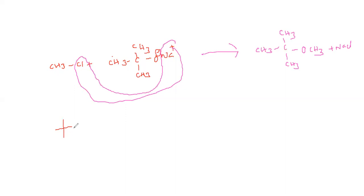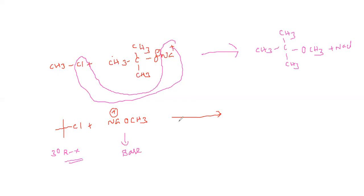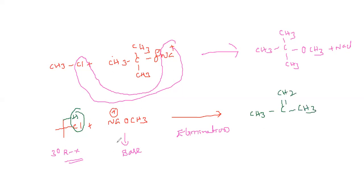Same question type: here they give a tertiary alkyl halide with sodium methoxide Na⁺OCH3. In this case, whenever they give a tertiary alkyl halide, it is acting as a strong base. So it does not involve an SN2 reaction — it is actually an elimination reaction, because of the bulky size of the alkyl halide. The result is loss of HCl, giving CH3C(CH3)=CH2.